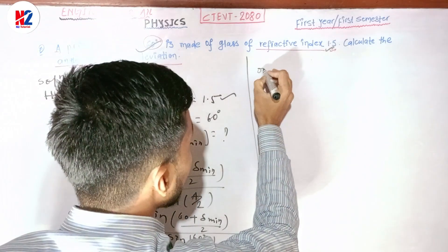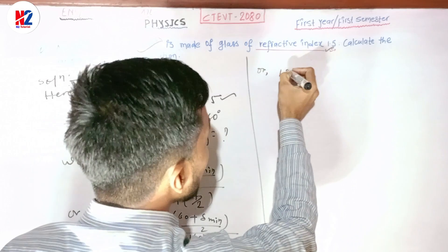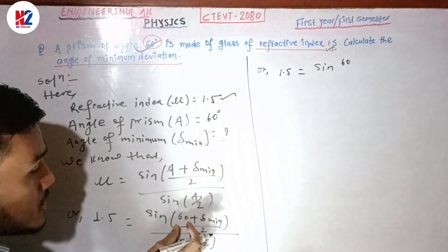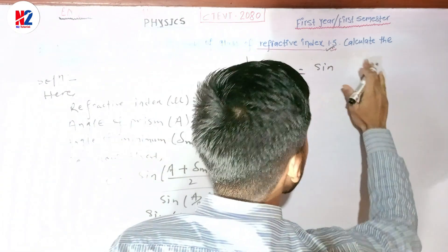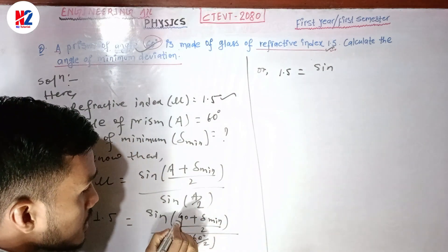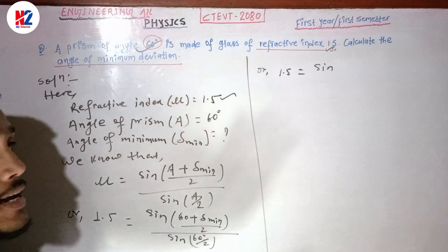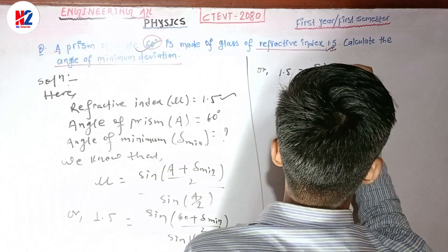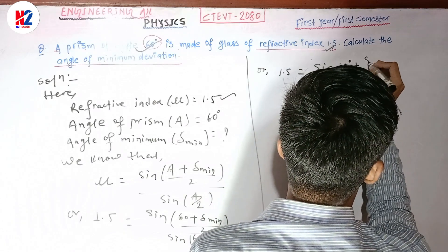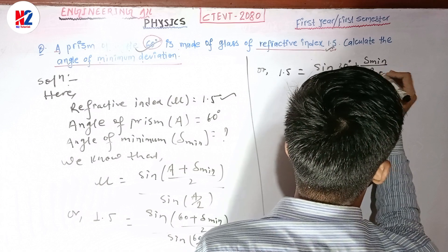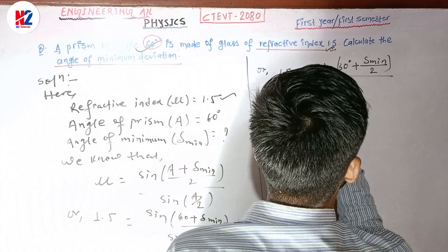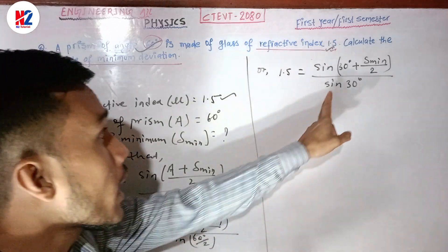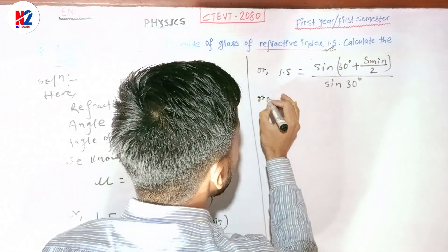It is equal to sin(60°) - the angle A is 60 degrees, so A/2 equals 30 degrees. Now, δ_min is the angle of deviation we need to find. We set up: sin((30° + δ_min) / 2) divided by sin(30°).